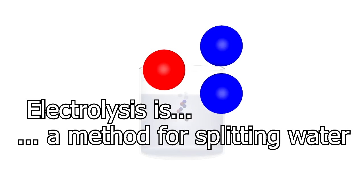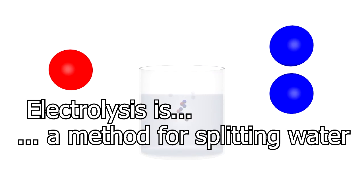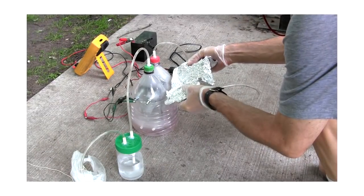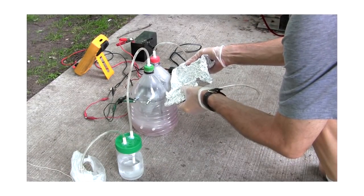Electrolysis is a method for splitting that H2O apart. For splitting water, that's done by inserting two metal electrodes into the water with a gap between them. Pure water isn't electrically conductive, so we add something to it to make it conductive. In our case we're adding sodium hydroxide, but many things will do.